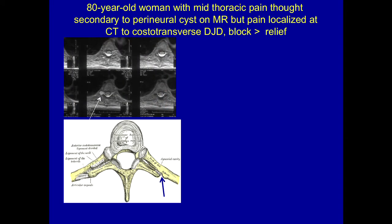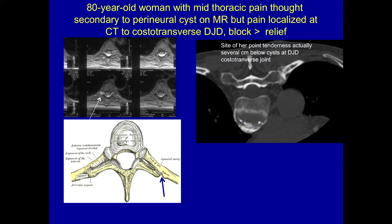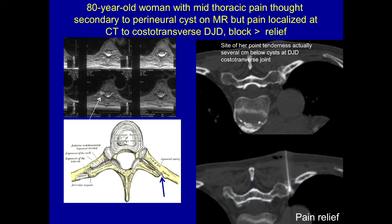This patient was referred with thoracic back pain. An MRI showed perineural cysts, and the plan was to inject those. But when she came in — she was about 85 — I said, 'Point with your finger where the pain is.' She pointed right to the spot, we put a BB on it, and it was eight centimeters away from her perineural cyst.